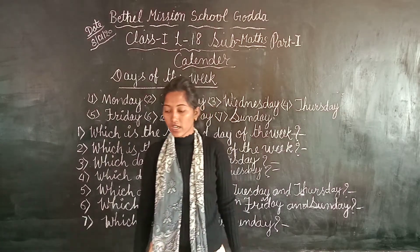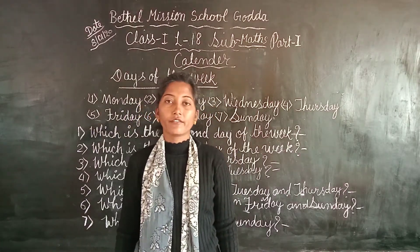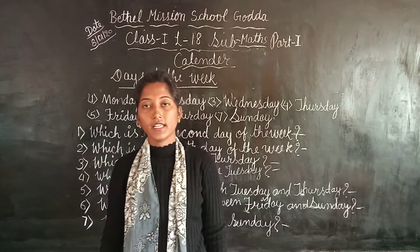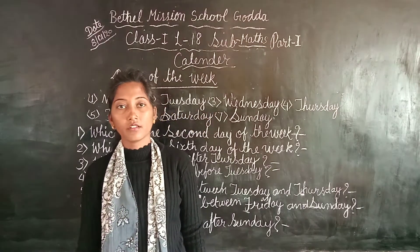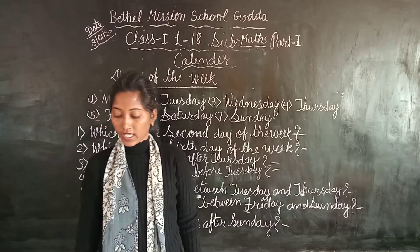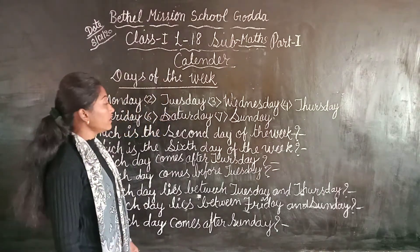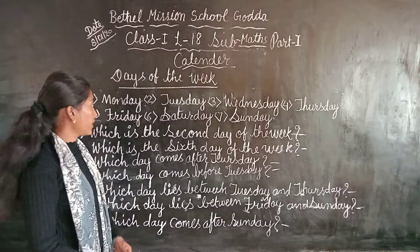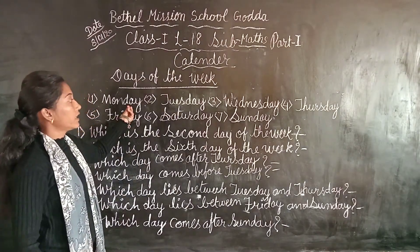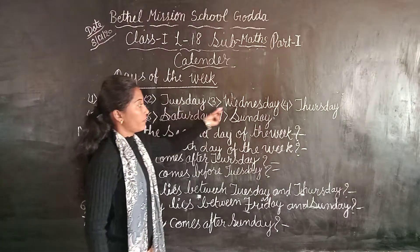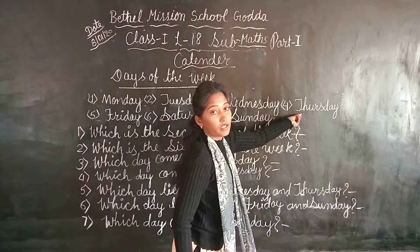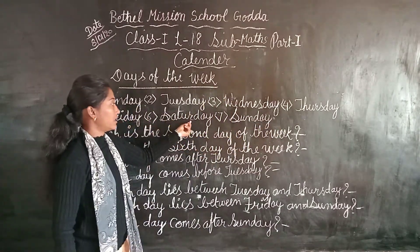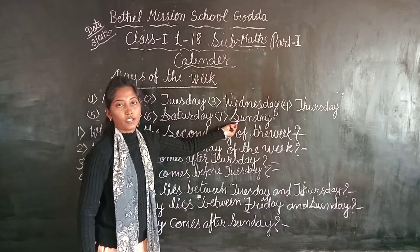So dear students, how many days are in a week? Do you know? Yes, there are 7 days in a week: Monday, Tuesday, Wednesday, Thursday, Friday, Saturday, Sunday.